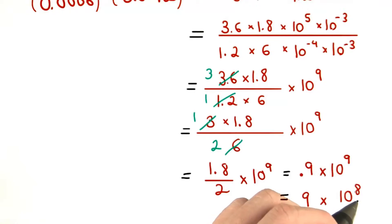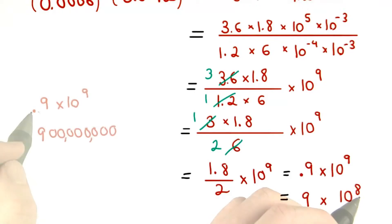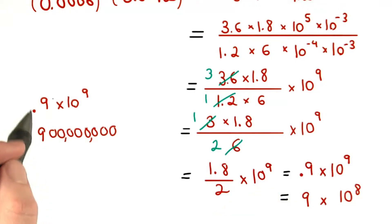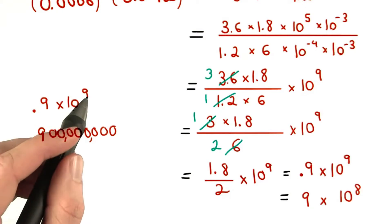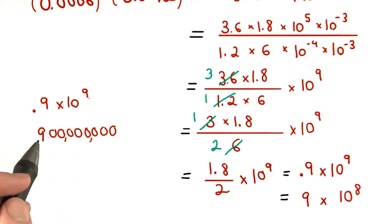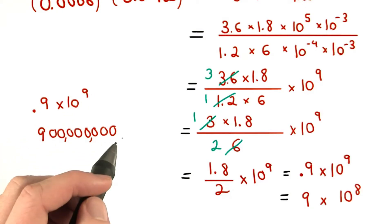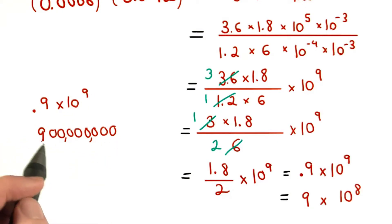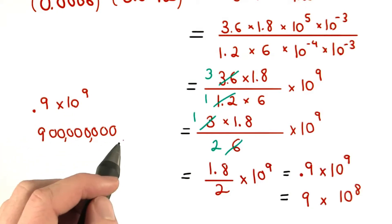The exponent should be a positive 8. Great thinking if you got it right. If we multiply 9 tenths times 10 to the 9th, we would get 900 million — a 9 followed by 8 zeros.